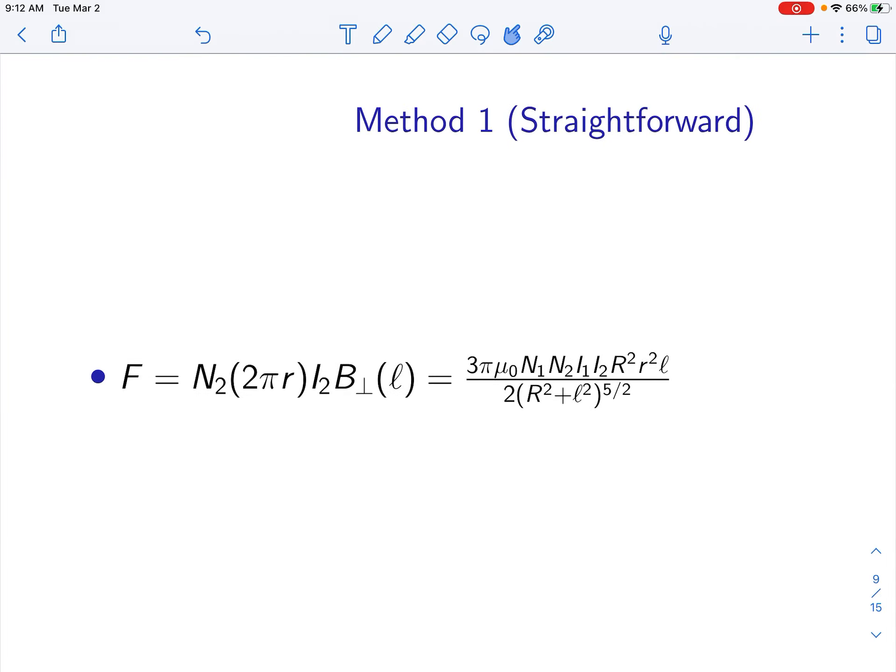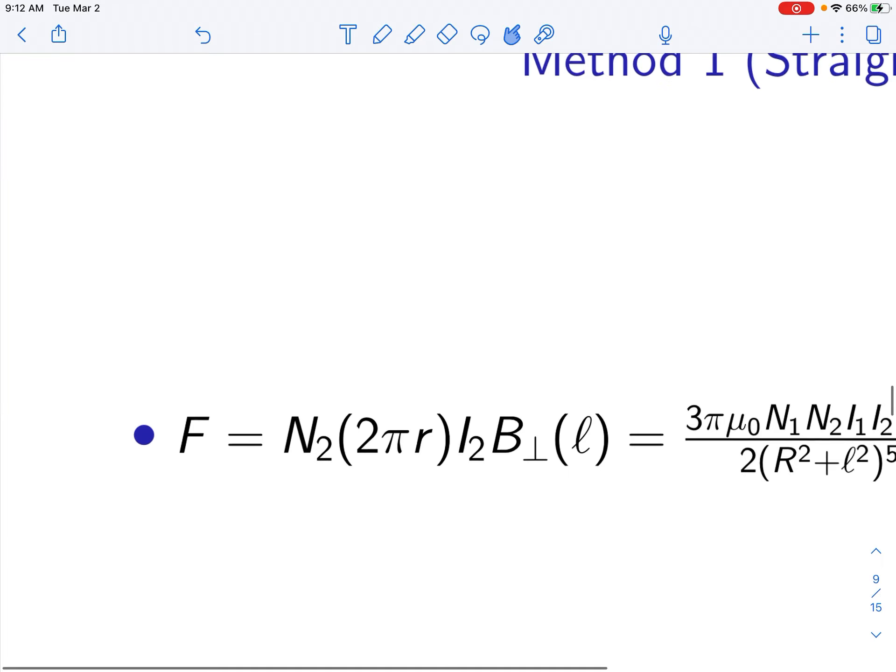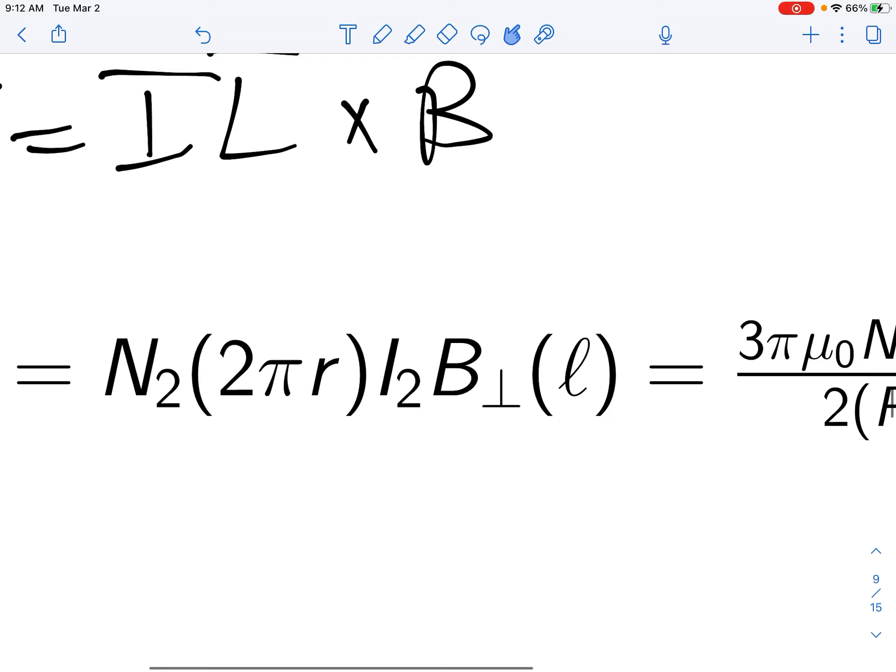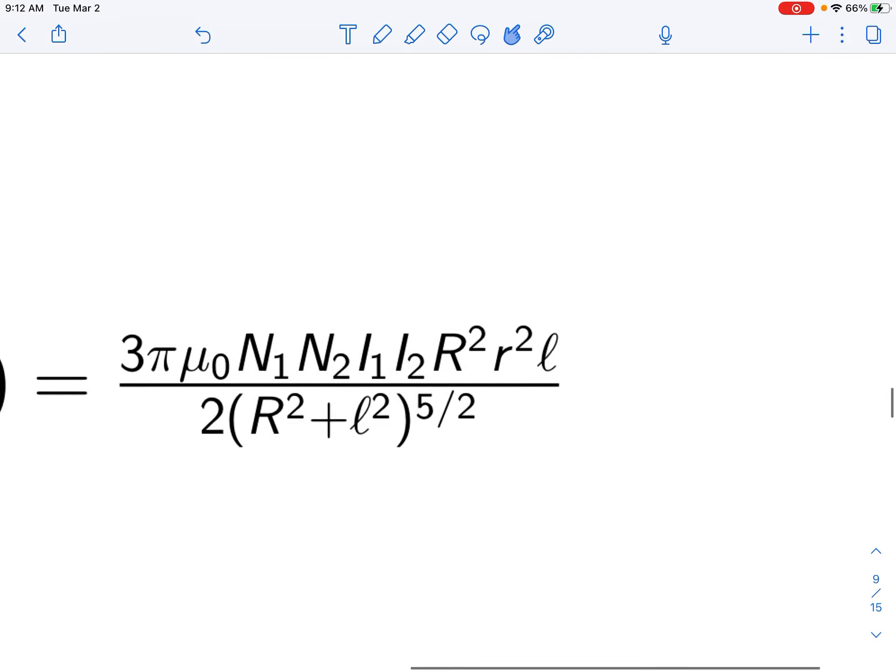Now that we know the perpendicular component, we can simply apply this formula again. Since B perpendicular is perpendicular to L at any point, you multiply all of these for the small wire loop of 2πr, and you get this formula.